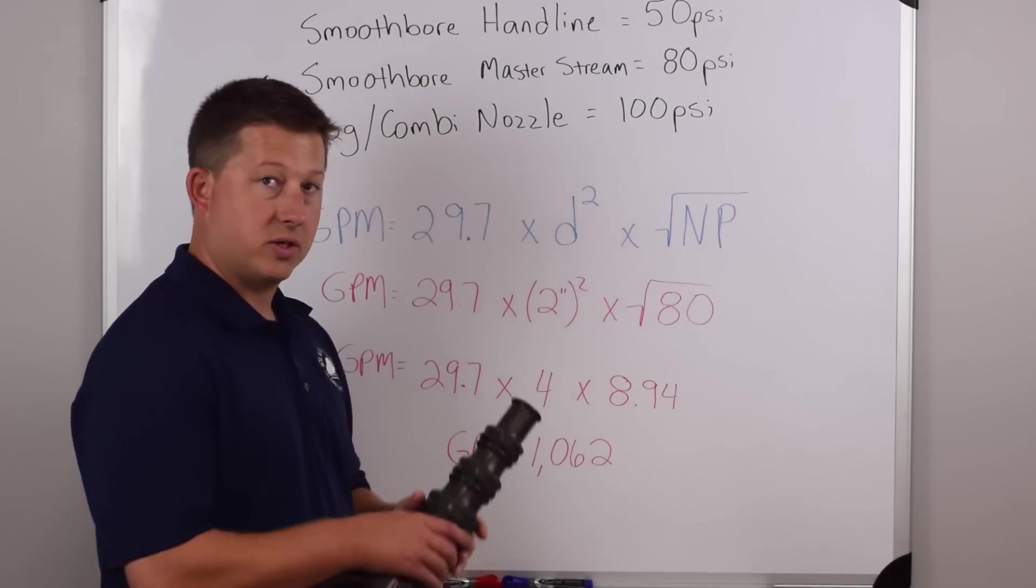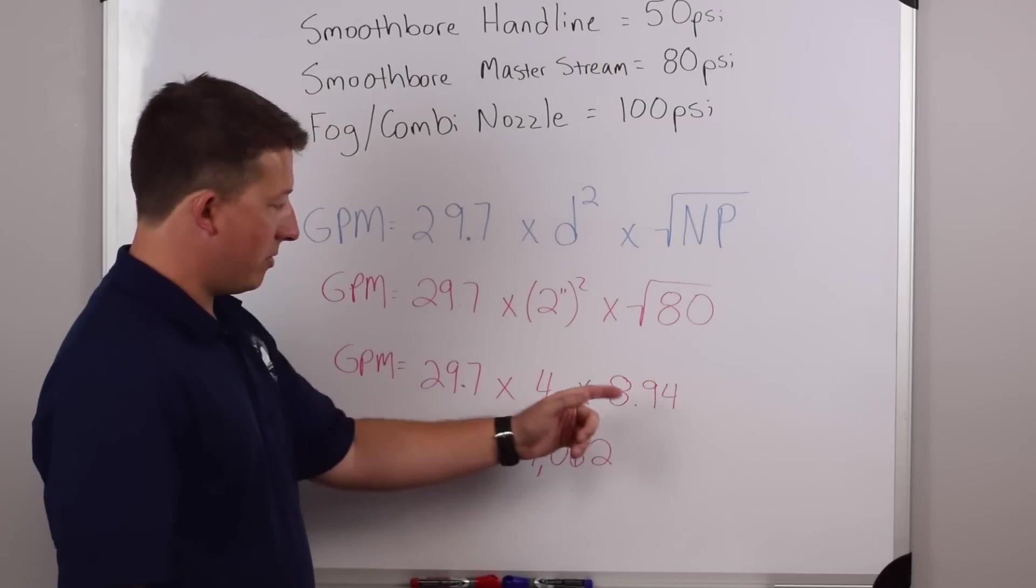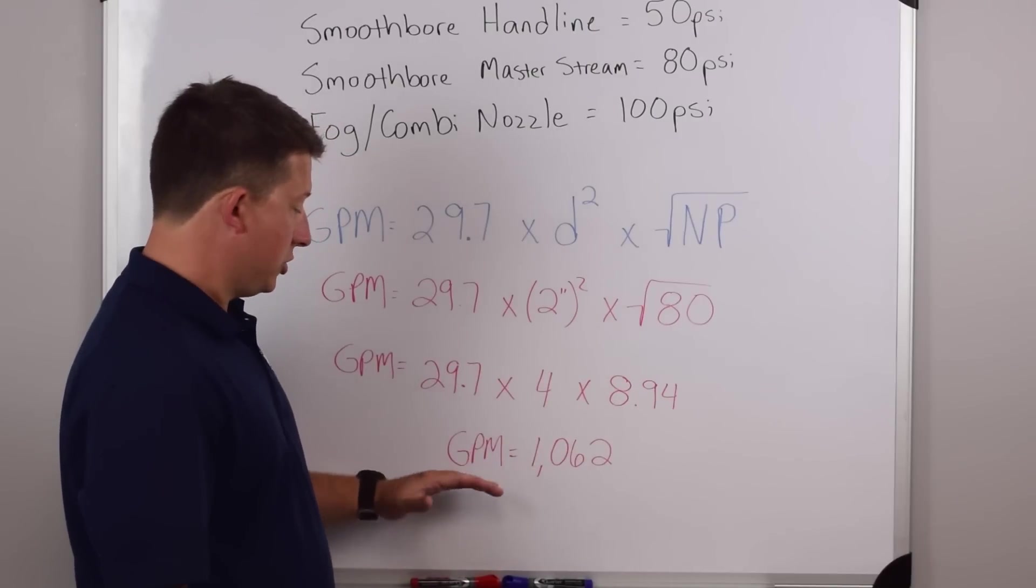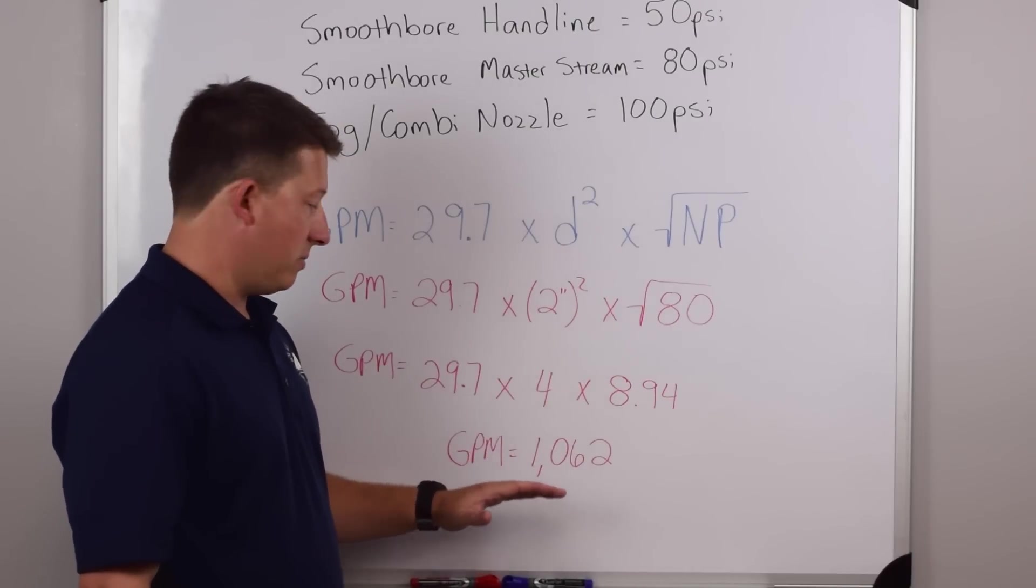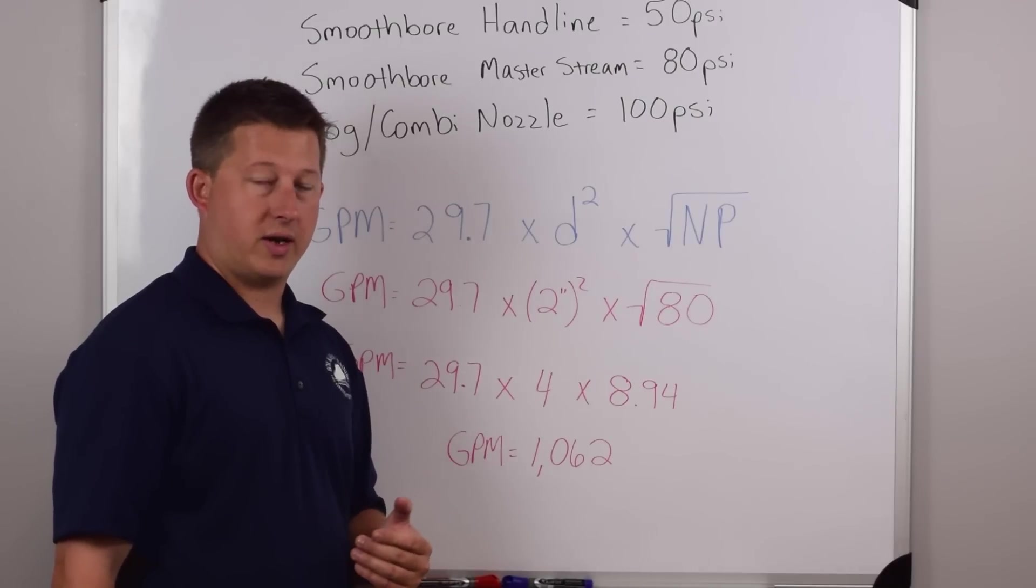So we multiply out the problem and 29.7 times 4 times 8.94 should get you a GPM of 1,062. So a two inch master stream smoothbore tip will flow just over a thousand gallons per minute.